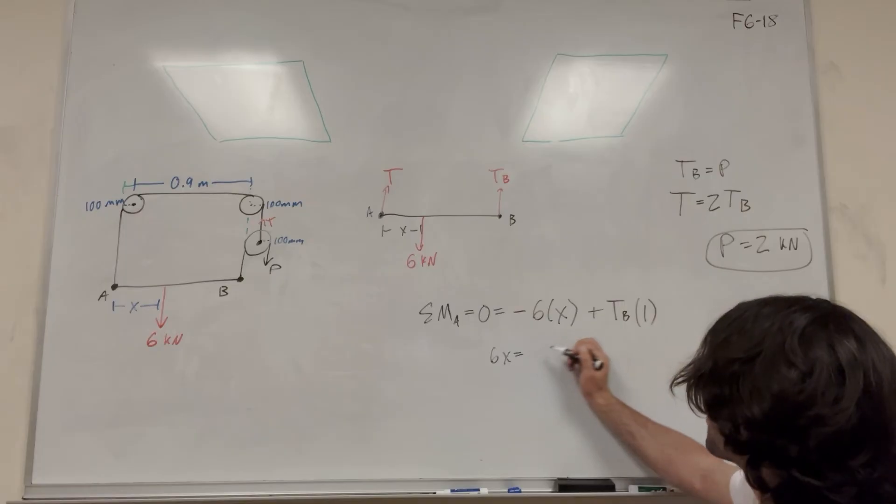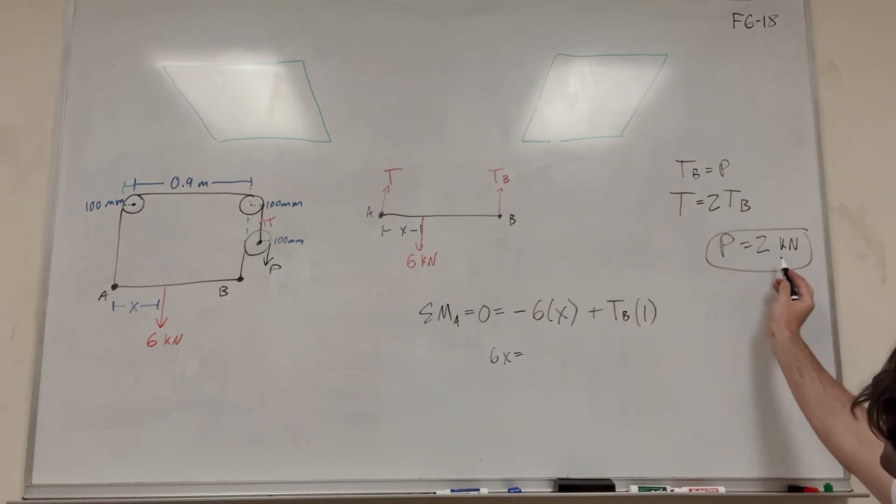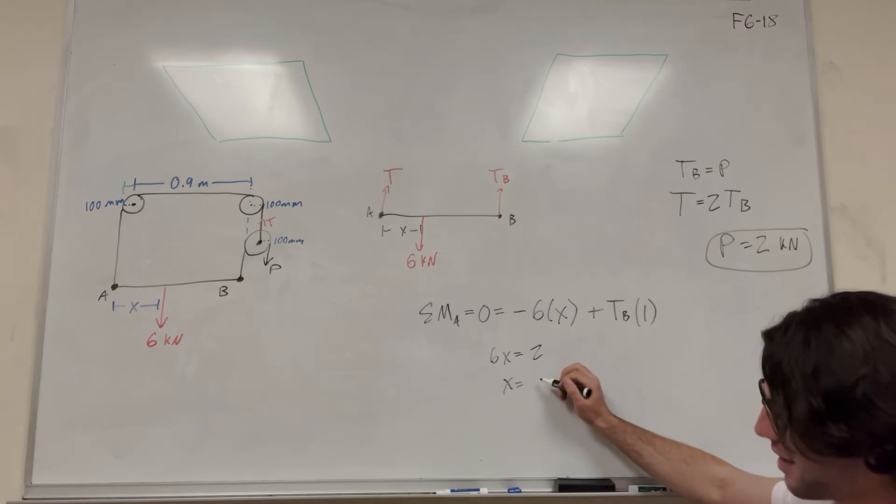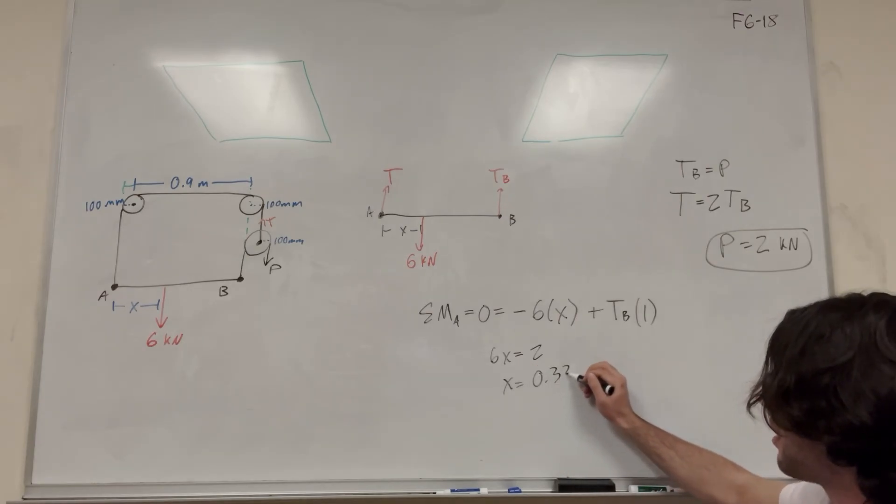So 6x is equal to tension of B, which we found here, is 2 kilonewtons. 2, divide by that, and we get x is equal to 0.333 meters.